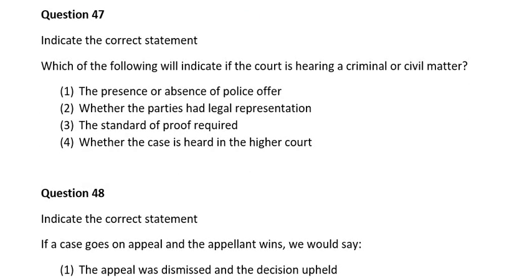Question forty-seven. Indicate the correct statement. Which of the following will indicate if the court is hearing a criminal or civil matter? Number one, the presence or absence of a police officer; number two, whether the parties had legal representation; number three, the standard of proof required; number four, whether the case is held in the High Court. The correct answer is number three: the standard of proof required.